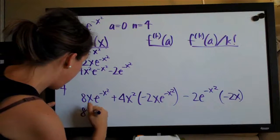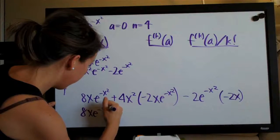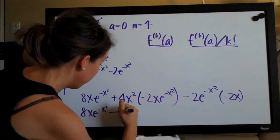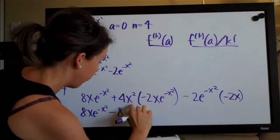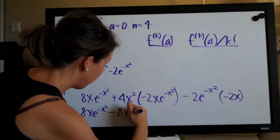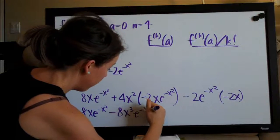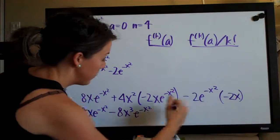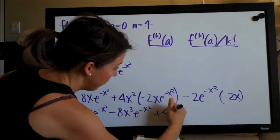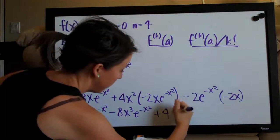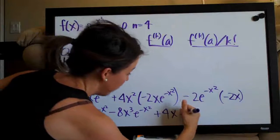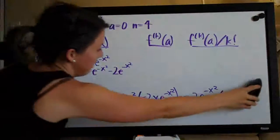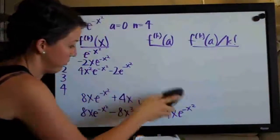So we're looking at 8x·e^(-x²), and then 4 times negative 2 is minus 8, and this would be x² times x which would be x³·e^(-x²). Then we have negative 2 and negative 2, so that's plus 4, and we bring the x out in front and we have e^(-x²). So that's our simplified version.